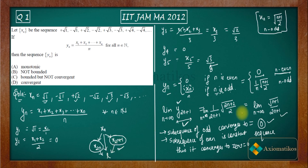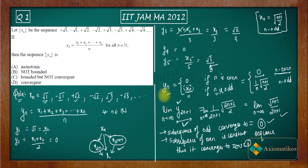Since both the odd and even subsequences of yn converge to 0, by the theorem we conclude that the sequence yn converges to 0. Therefore yn is a convergent sequence.